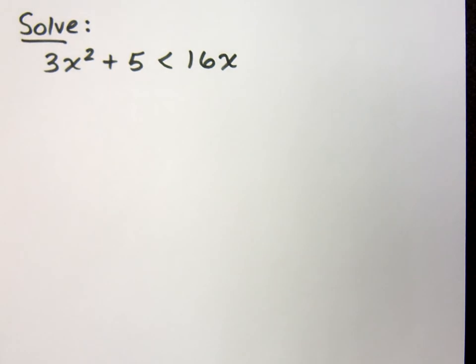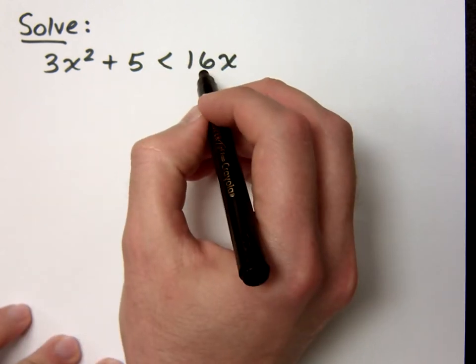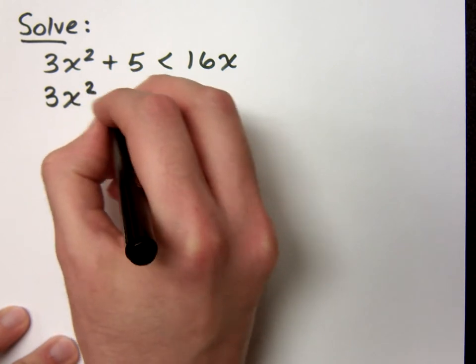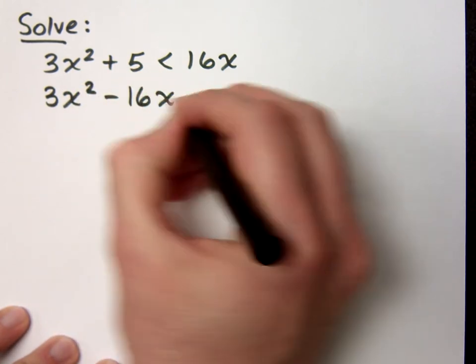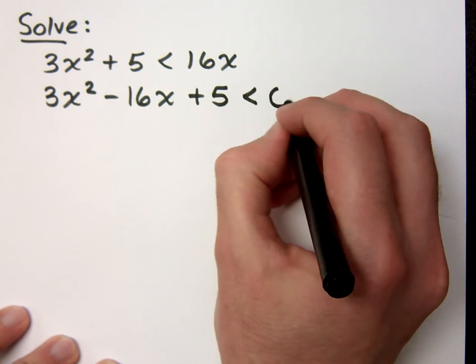Let's take a look at another quadratic inequality. Now we know this is a quadratic inequality. If I move this 16x to the other side, I get 3x² - 16x + 5 < 0.